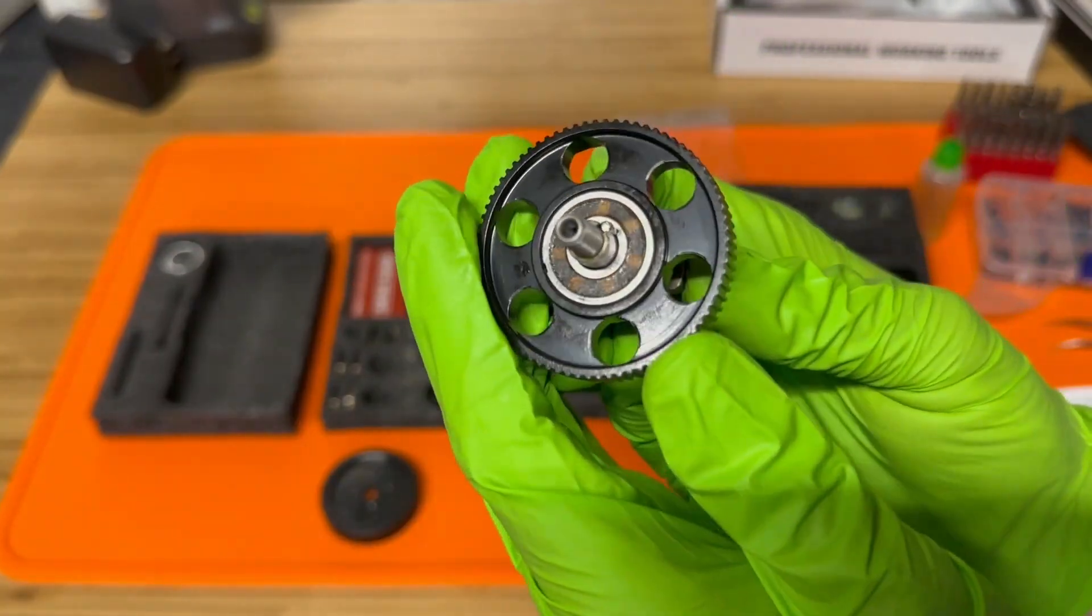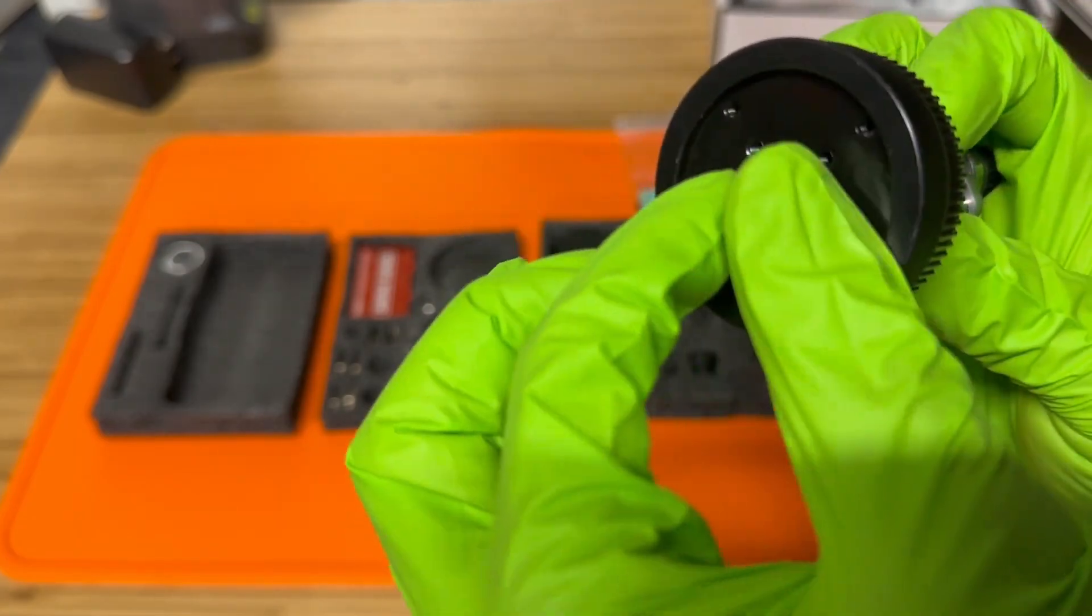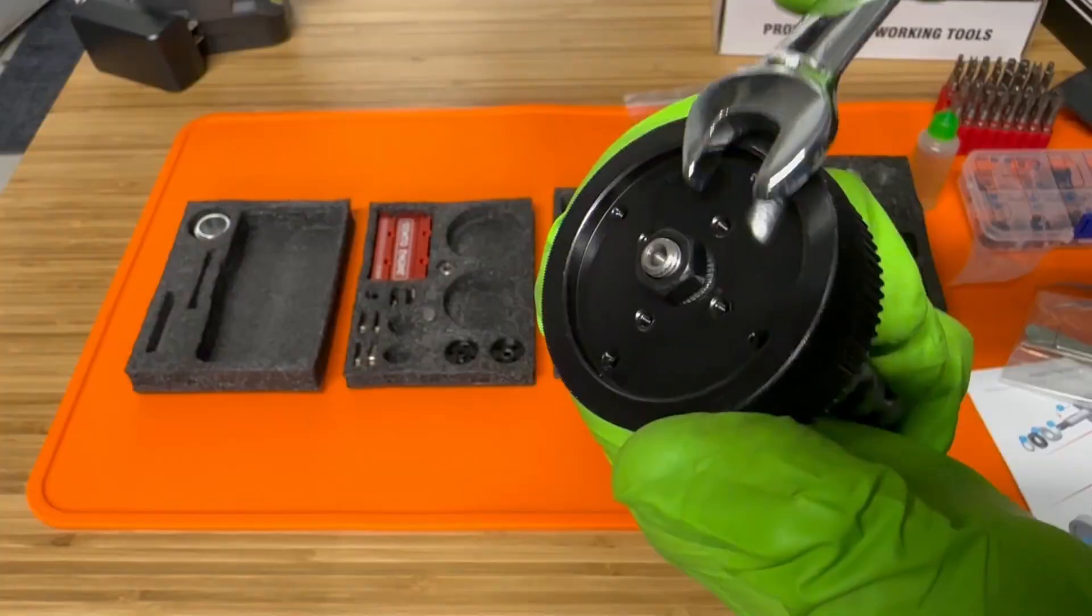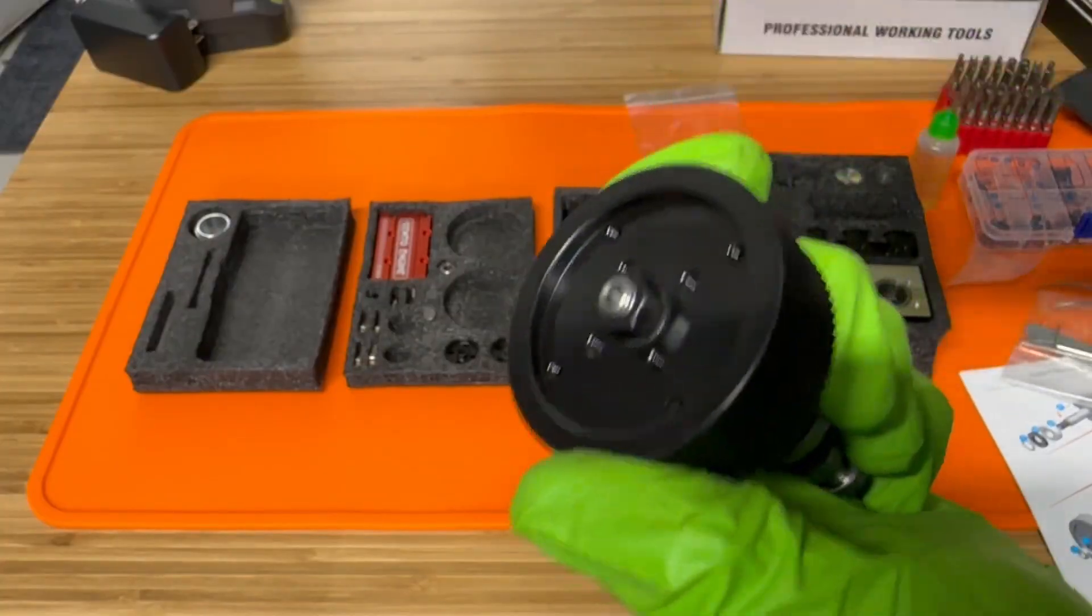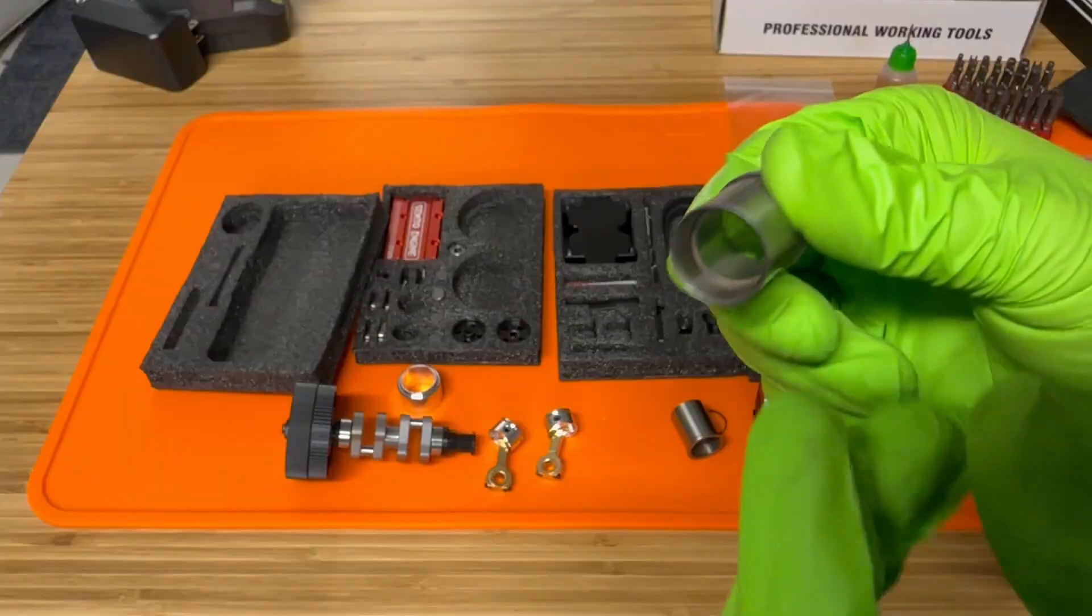Then we're going to take our flywheel and put it on the back of that and we're going to secure it with a nut. I would actually recommend using some type of Loctite on here because during my testing I found that that nut does come off pretty easily.